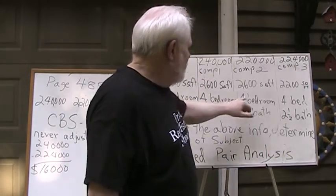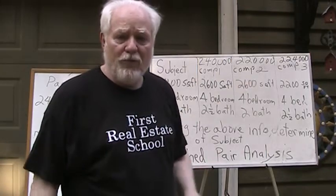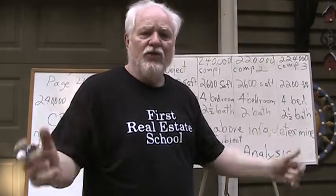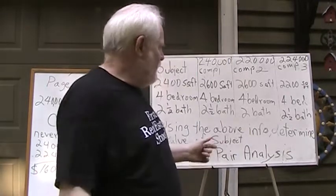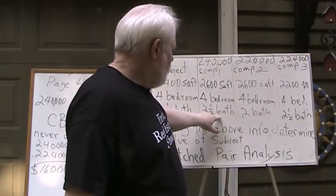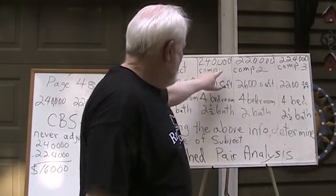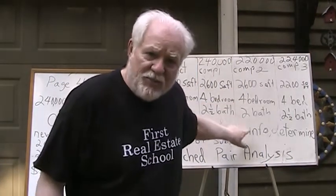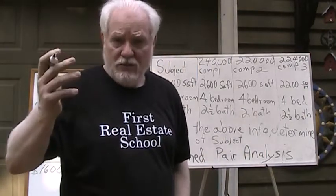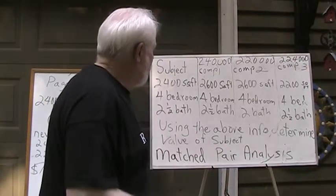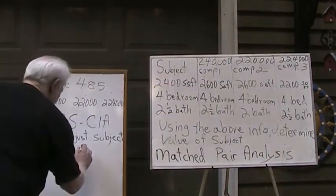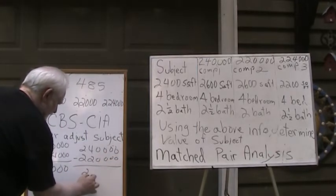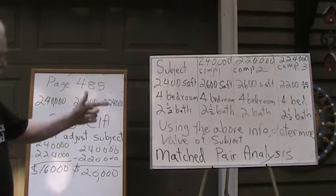We don't need to know the value of a bedroom because all the comps are four-bedroom houses. But we've got a two-and-a-half bath subject, and comparable two is two-bath, so we need to know the value of a half a bath. Here's how we figure that out: comparable number one and comparable number two are identical in square feet and identical in bedrooms. The only difference between them is the half bath. So if we subtract $220,000 from $240,000 — 240 minus 220 — we can ascertain that the half bath is worth $20,000 based on this method.